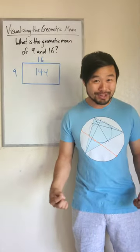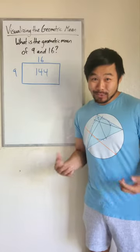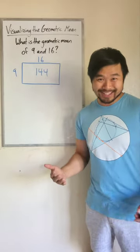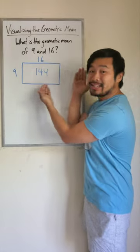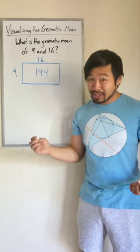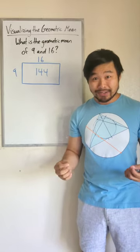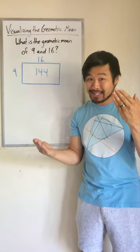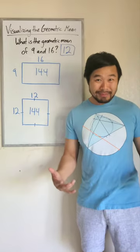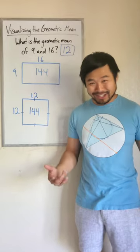So if we're looking for the geometric mean of two numbers, we can think about a rectangle. Say that we're looking for the geometric mean of 9 and 16. 9 times 16 is 144. So let's keep this product, or this area. But we want to make this into a square. 12. So the geometric mean of 9 and 16 is 12.